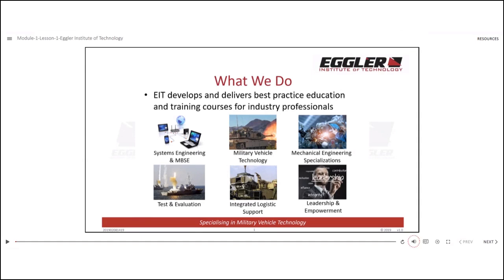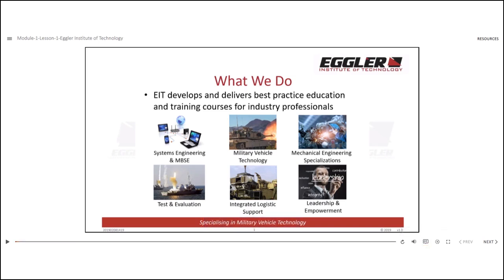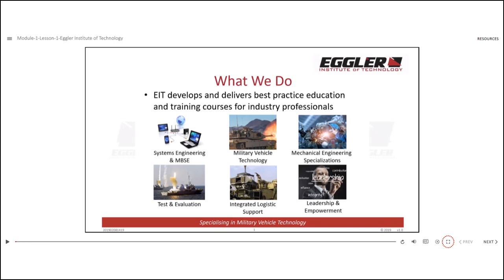You can adjust the volume by clicking on the speaker icon. To enable closed captions, simply press the CC button. You can also adjust the playback speed by clicking this button here. Additionally, there is a full-size screen option available by clicking the screen icon on the right-hand side.